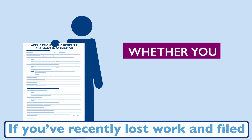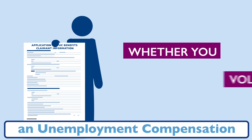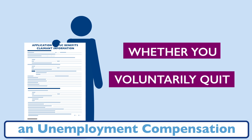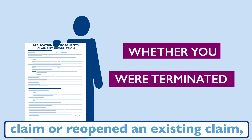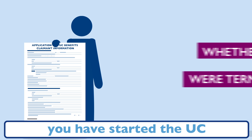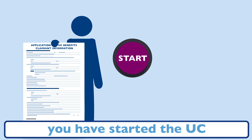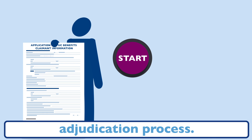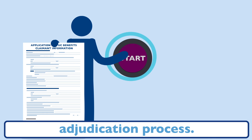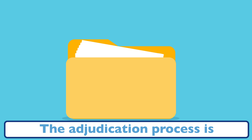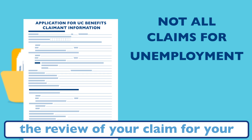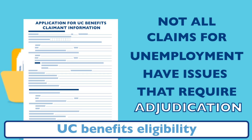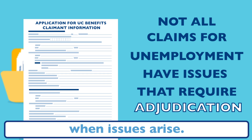If you've recently lost work and filed an unemployment compensation claim or reopened an existing claim, you have started the UC adjudication process. The adjudication process is essentially the review of your claim for your UC benefits eligibility when issues arise.